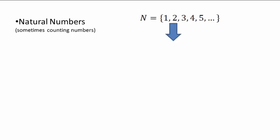Numbers evolve out of necessity. The first set of numbers is the counting numbers, which evolved because people wanted to keep track of their sheep and so on — to count, basically. That's why they're called counting numbers. This notation is called set notation. Capital N is used to represent natural numbers, and the two curly brackets are enclosing the elements of the set.